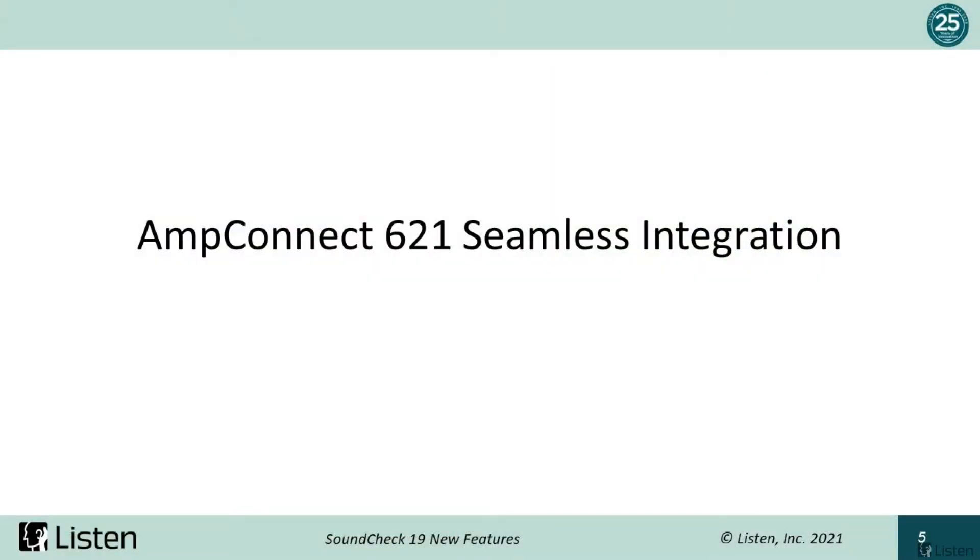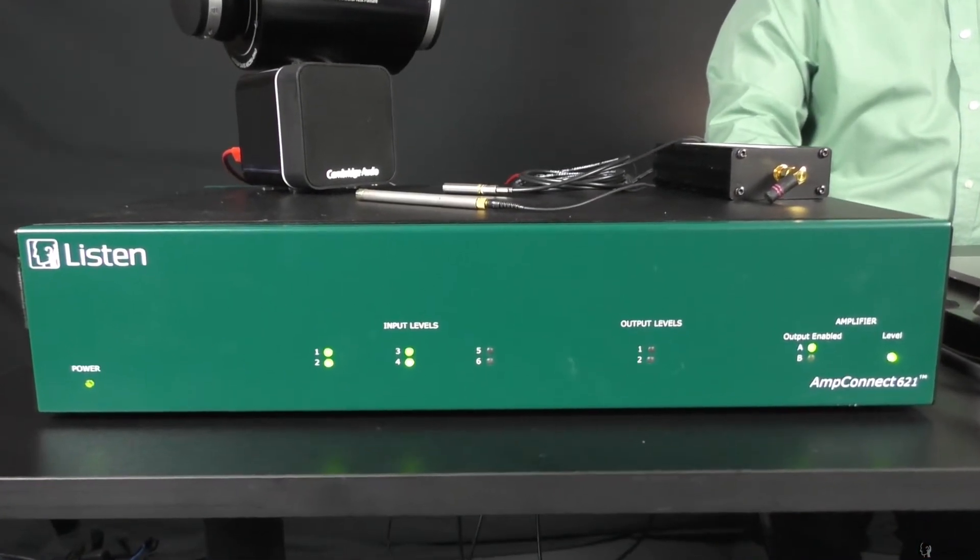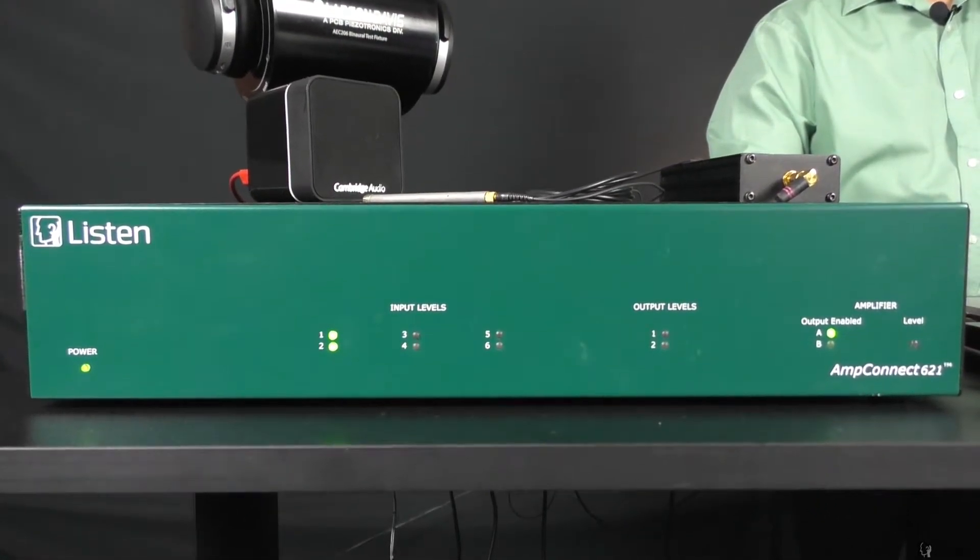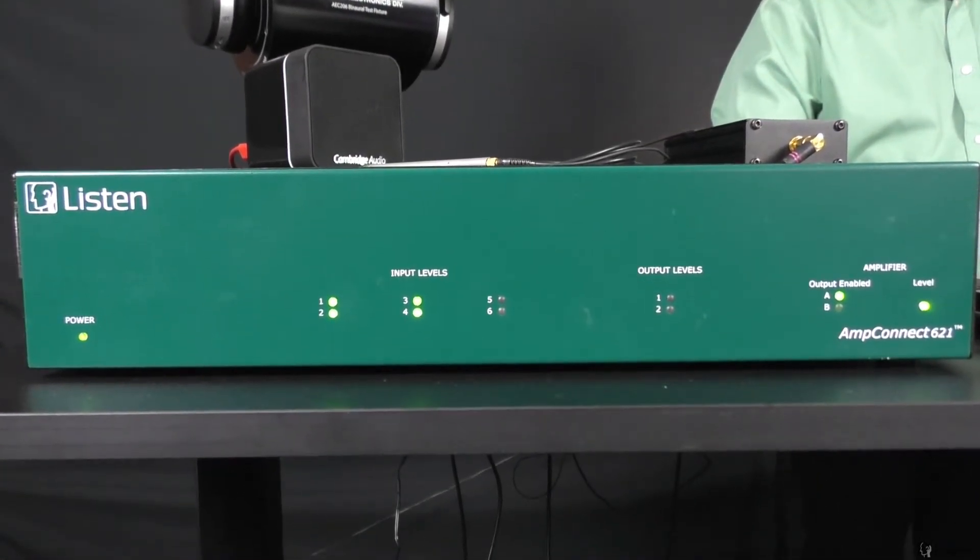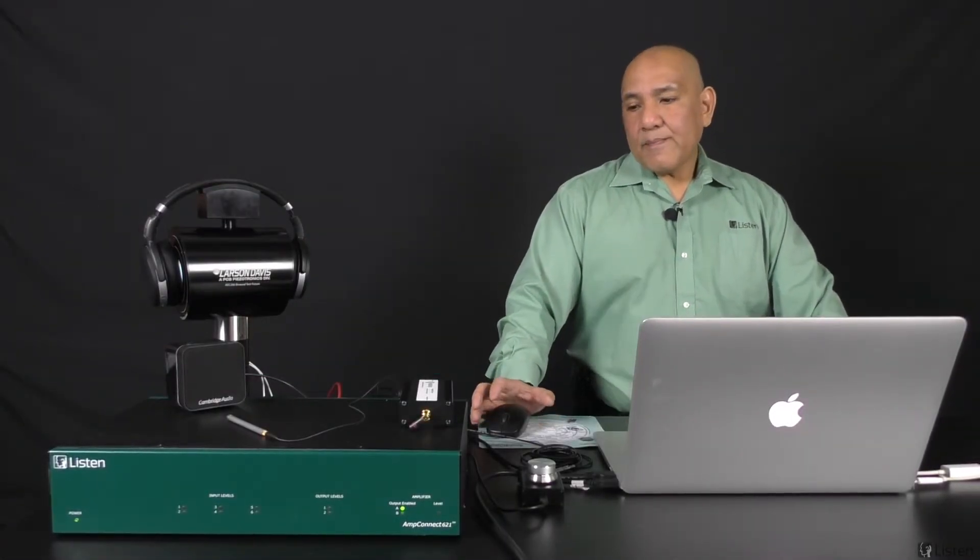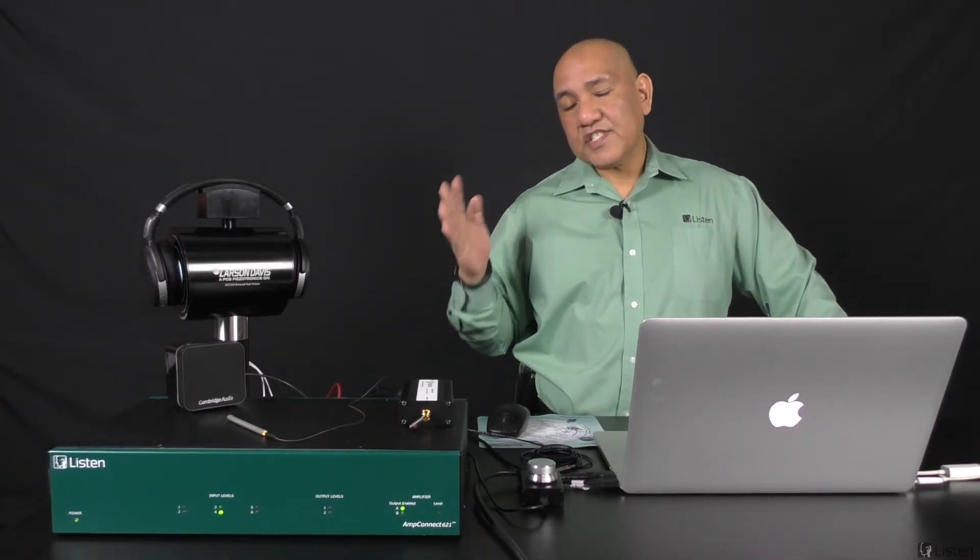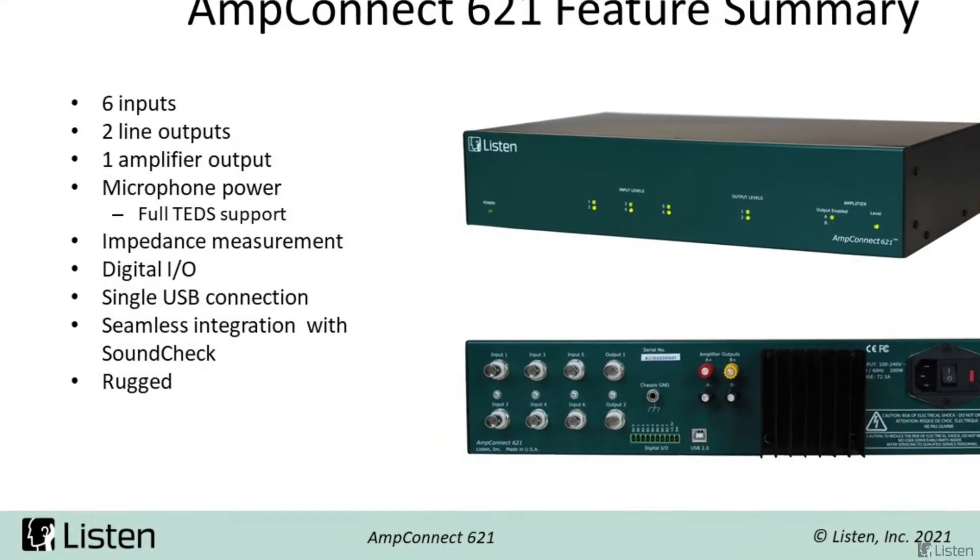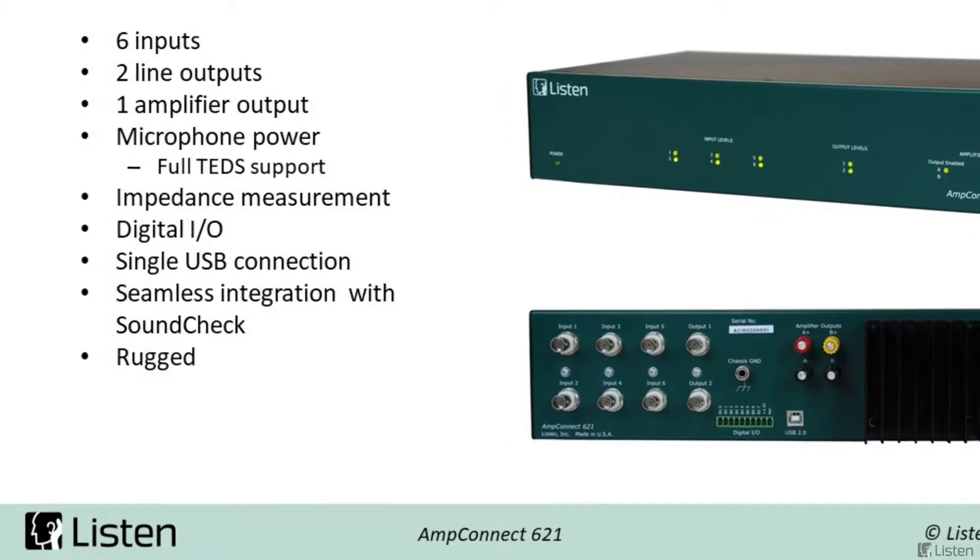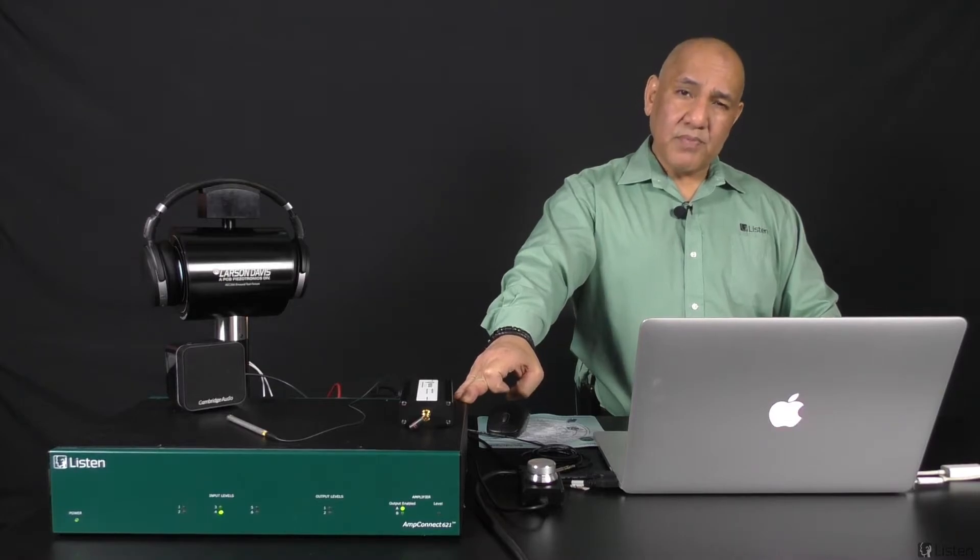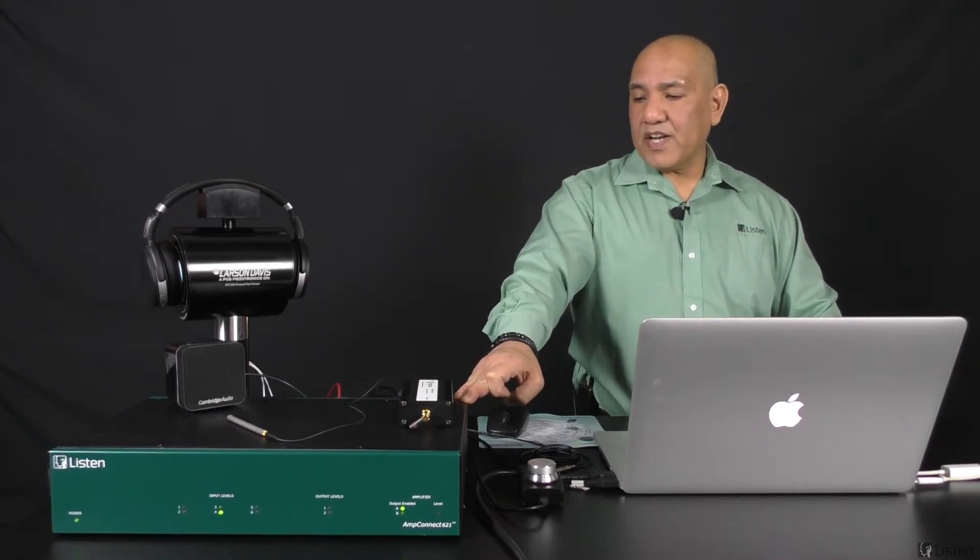AmpConnect 621 is Listen's new all-in-one, high-resolution, multi-channel test interface. This is really an extension of our previous AmpConnect ISC. Soundcheck 19 adds full control of this interface. It's 621, six inputs that could be configured as line or microphone inputs. Two line outputs as well as one amplifier. We support both SCM mic power as well as IEPE mic bias on the 621.